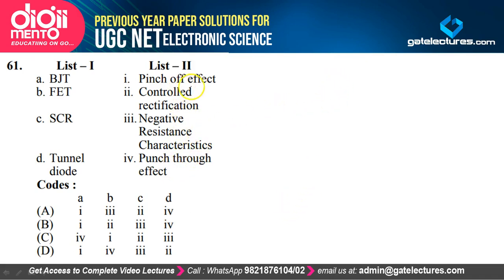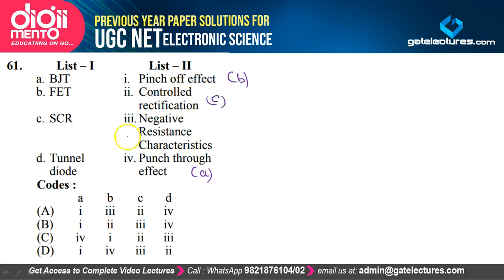Question 61: Matching devices to effects — BJT is related to punch-through effect (A→4); FET is matched to pinch-off effect (B→1); silicon-controlled rectifier is matched to controlled rectification (C→2); tunnel diode is matched to negative resistance characteristics (D→3). Option C satisfies the explanation.